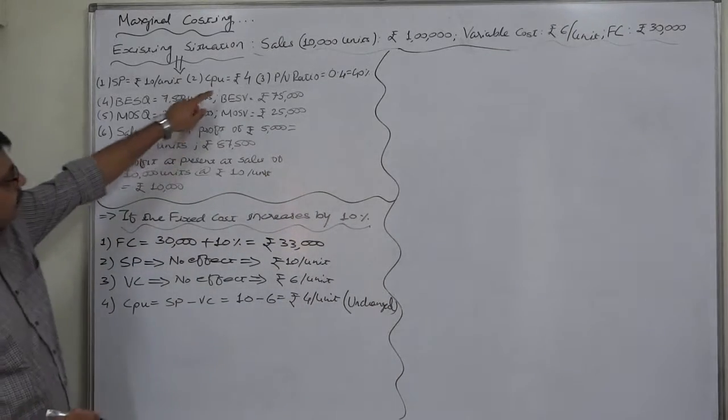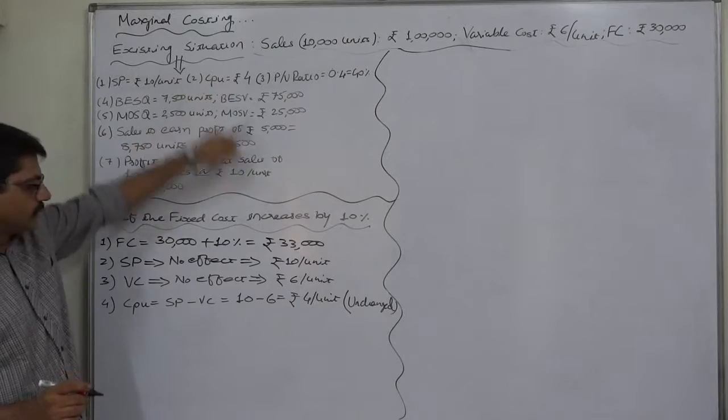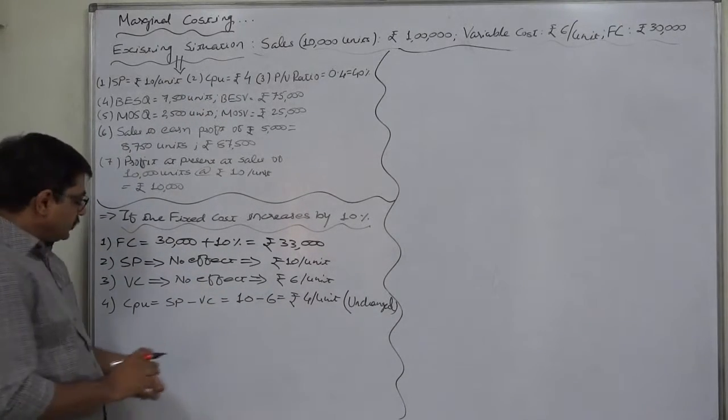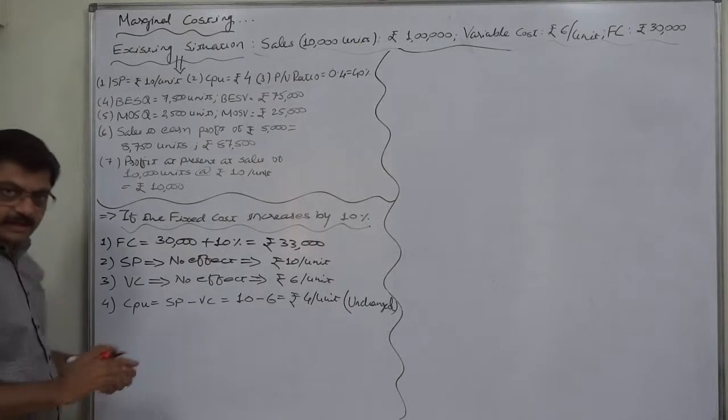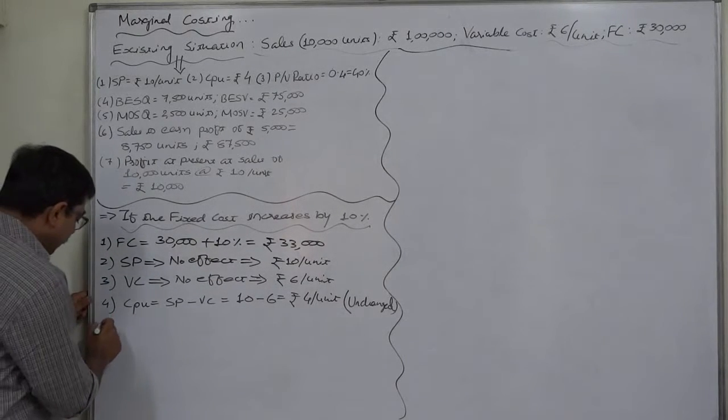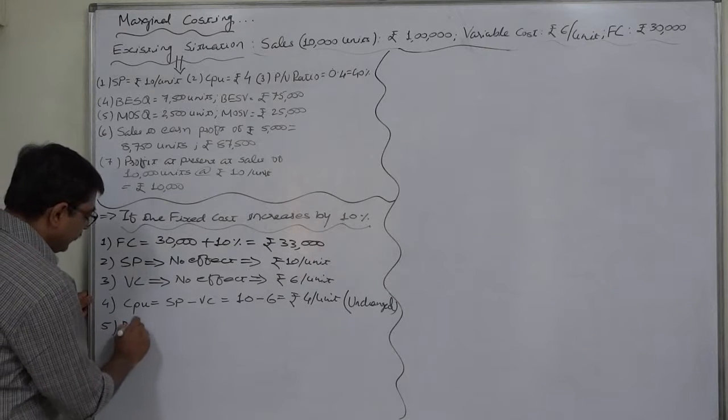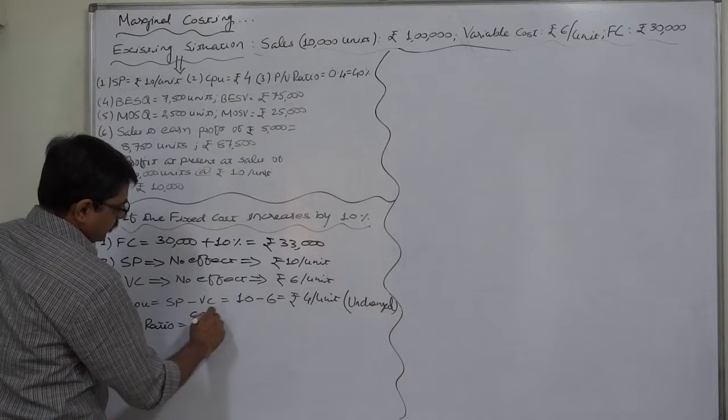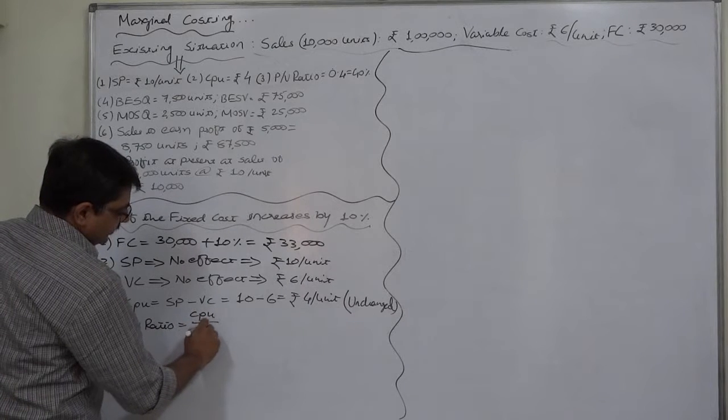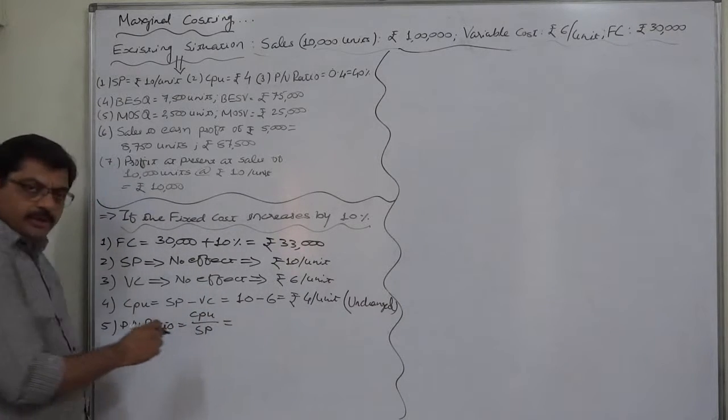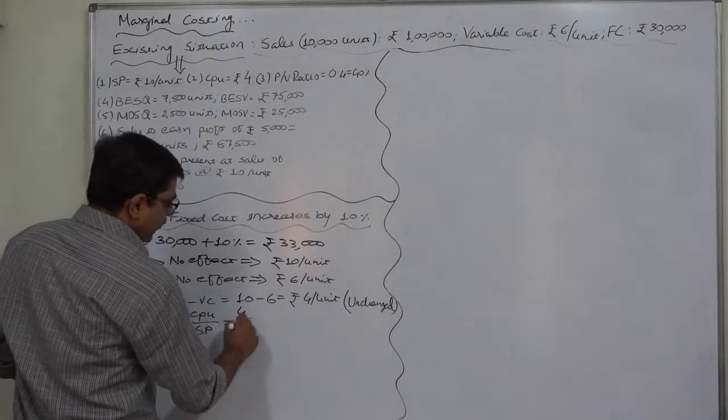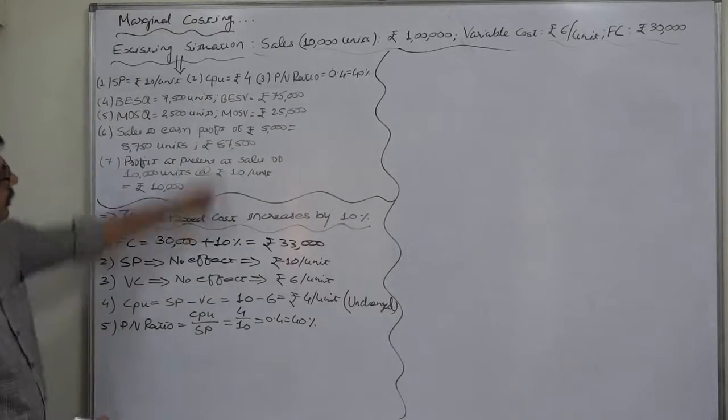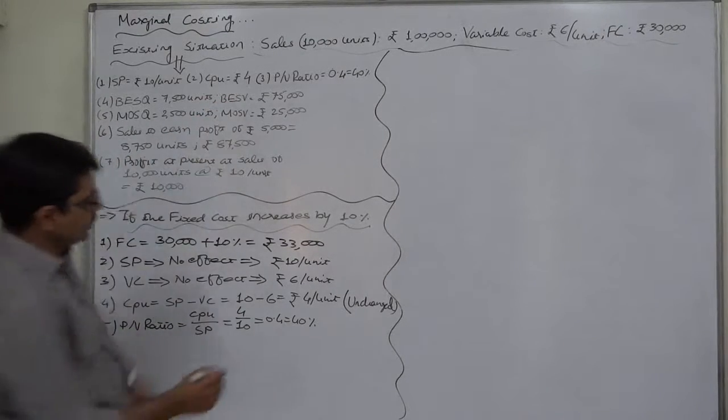It is rupees 4 at present or under existing situation. It will remain rupees 4. Since there is no change in contribution per unit as well as selling price, again there will be no change in PV ratio, contribution upon sales, sales revenue, either both per unit or both total. 4 by 10, it is 0.4 or 40 percent. Again, so it remains the same, no change.